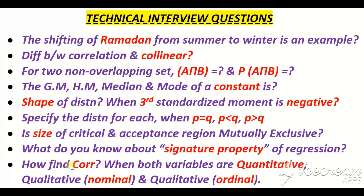How do we find correlation based on variable type? If both variables are quantitative, we use the Pearson coefficient of correlation. If both variables are qualitative but recorded at the nominal level, we use a contingency table approach to assess the relationship between them. And if both variables are qualitative but recorded at the ordinal level, we use the Spearman coefficient of correlation, also known as rank correlation.